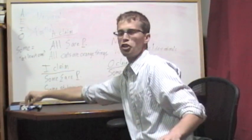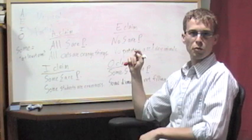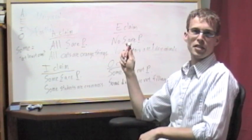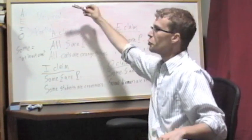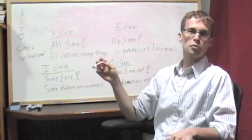I said earlier that there were two aspects to these kinds of categorical claims. Now the first aspect is whether the claim is universal or partial. The first two, A and E claims, are universal claims.